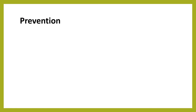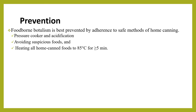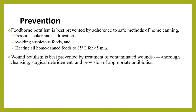Regarding prevention, foodborne botulism is best prevented by adherence to safe methods of home canning — such as using a pressure cooker and acidification — by avoiding suspicious foods, and by heating all home-canned foods to 85 degrees Celsius for greater than five minutes to eradicate botulinum toxin. Wound botulism is best prevented by not using illicit drugs, and by treating contaminated wounds with wound cleansing, surgical debridement, and appropriate antibiotics.